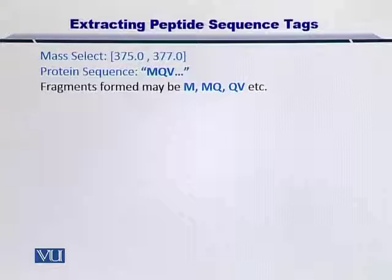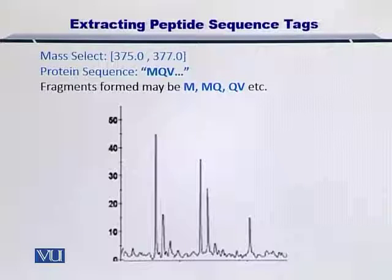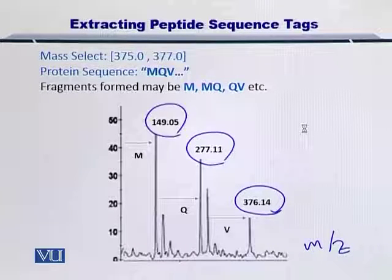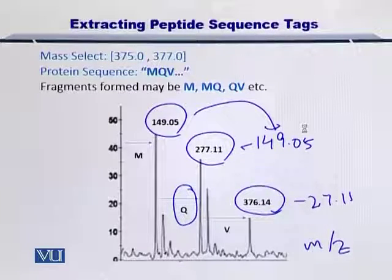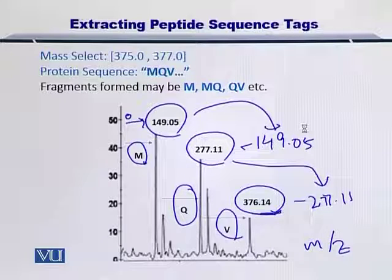Let me warm you up with an example. This was our small protein that we were looking at and the possible fragments that were reported are given here. Of course, if the protein is bigger, then the number of possible fragments can be very large. Assuming that this is the spectrum reported from MS2, the first, second, and third mass-over-charge ratios are given here. If you subtracted the peaks, it gave you a Q, and if you subtracted 277 from 376, then it gave you a V. In this case it's an M because it is starting from zero. In this way, you have obtained the amino acids that are there between the peaks.